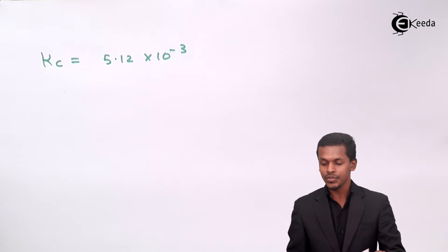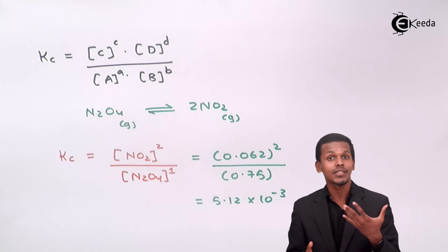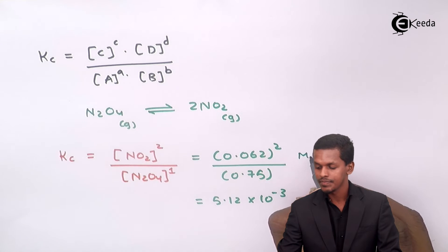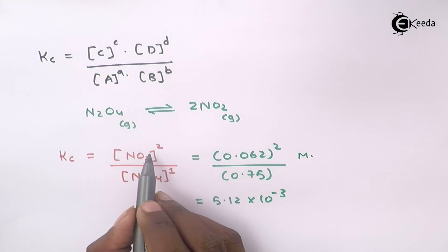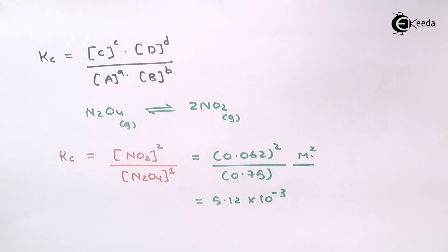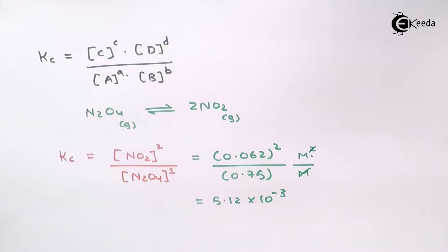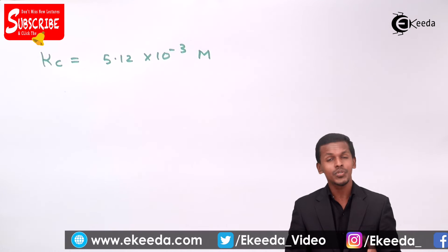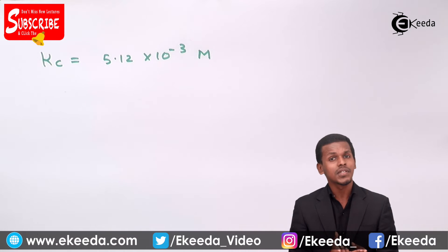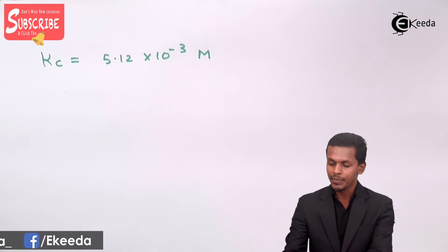Talking about the units of Kc: the numerator has molar squared, that is moles per dm³ squared, and the denominator has molar, that is moles per dm³. Cancelling one molar, the unit of Kc comes out to be molar. Note that by the law of mass action this gives units, though Kc is sometimes considered unitless.